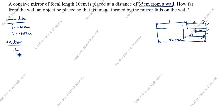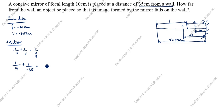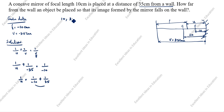Using the mirror formula: 1/u + 1/v = 1/f. We don't know u — we need to find it. 1/u + 1/v, and v is known as 1 over minus 35, equals 1/f, which is 1 over minus 10. So 1/u equals 1 over minus 10, and this term goes to the other side as plus 1 over 35.